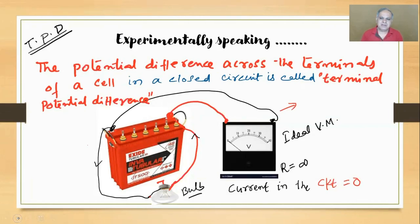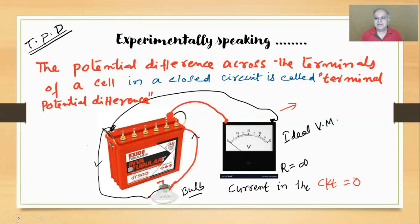Use the word 'terminal potential difference' - this actually gives proper meaning. Sometimes in physics the words also convey the meaning. The term 'electromotive force' is actually a meaningless word in that regard, but 'terminal PD' helps you to understand the meaning properly: whatever potential difference is appearing across the terminals when current is flowing.